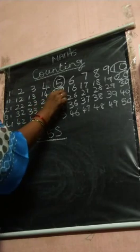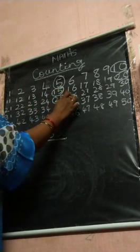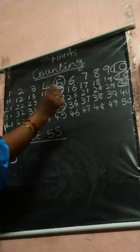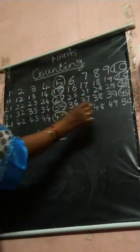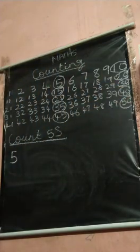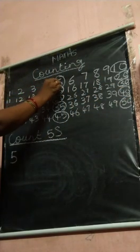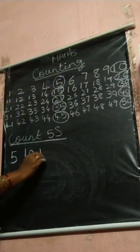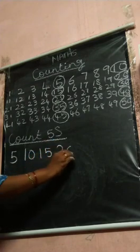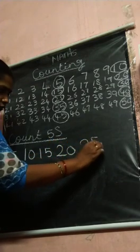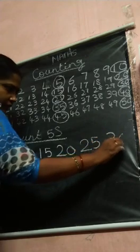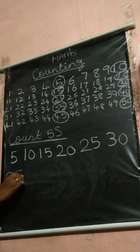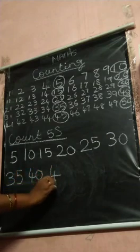Next five jump: one, two, three, four, five jumps — twenty-five. Next five jump: one, two, three, four, five — thirty. Next five jump: thirty-five. Next five jump: forty. Next: forty-five. Next: fifty. You take it and write it.